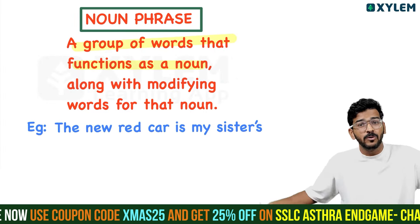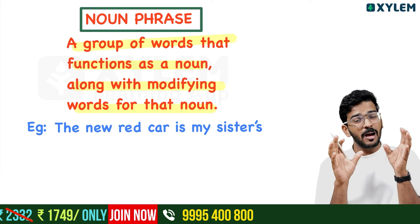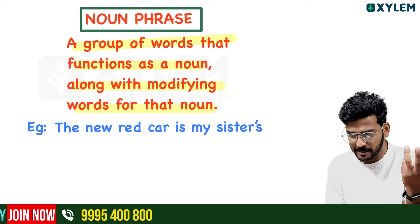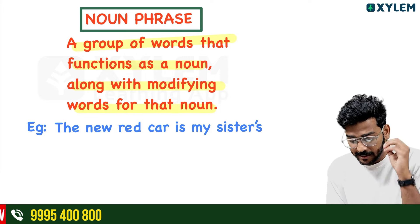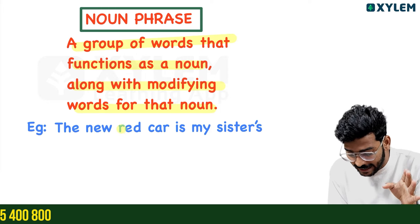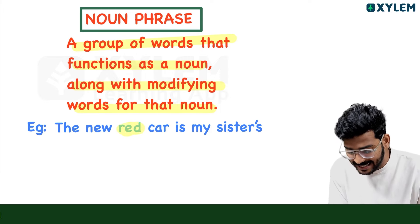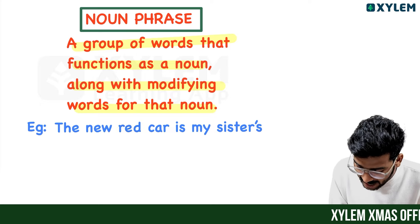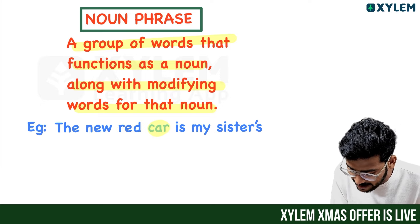For example: 'The new red car is my sister's.' Here, 'car' is the main noun. What is the name of the main noun? The new red car. The car is the main noun, and it is modified by 'red' and 'new.'